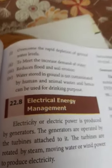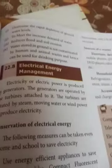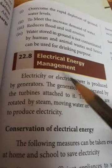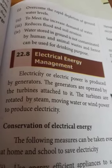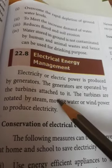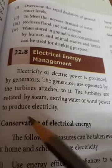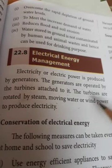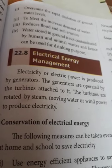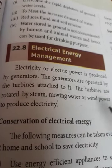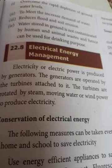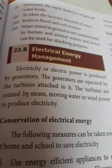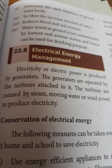Next, electrical energy and management. Electricity or electric power is produced by generators. The generators are operated by turbines attached to them. The turbines are rotated by steam, moving water, or wind power to produce electricity. Electricity can be produced by different methods — maybe by conventional methods or by using non-conventional sources of energy.